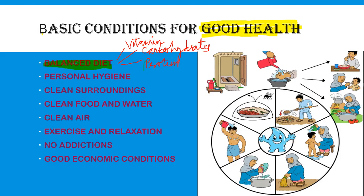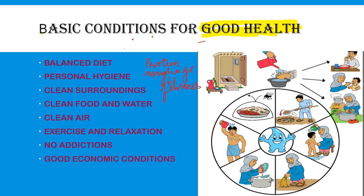So balanced diet hona chahiye. Even aapke diet ke andar kuch amount jo hai fats aur lipids ka bhi hona chahiye. Ghee bhi khana bahut zaroori hai. Aur next aapke roughage — roughage that is through your salad — roughage bhi hona chahiye. Fibers hone chahiye aapki body ke andar. Fibers fruits khaane chahiye, fibers like oats, daliya. Green leafy vegetables khaane chahiye. Ek balanced diet aisi nahi ki sirf ek hi tarike ka khana khate rahein — there should be a balanced diet.